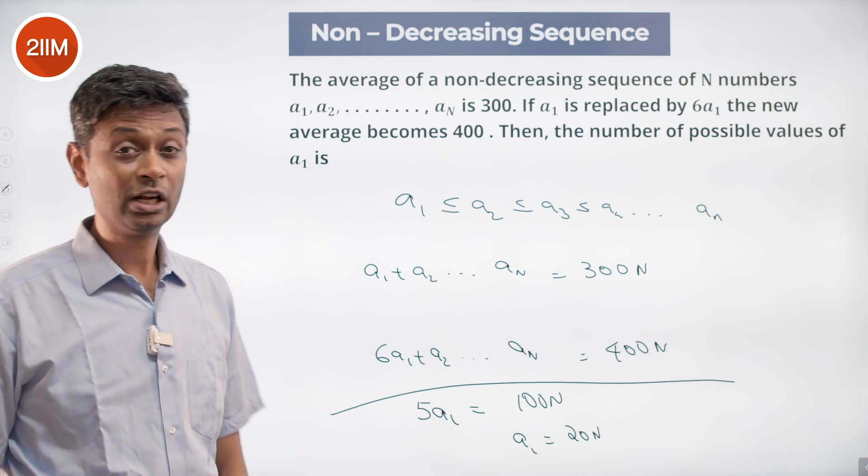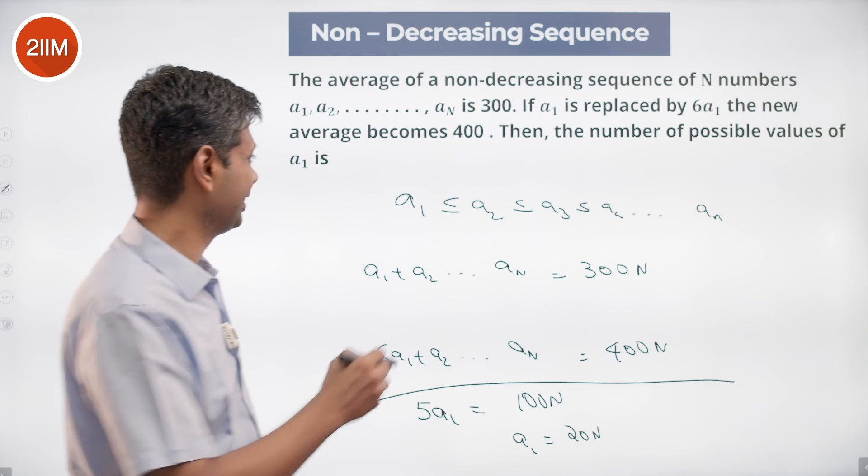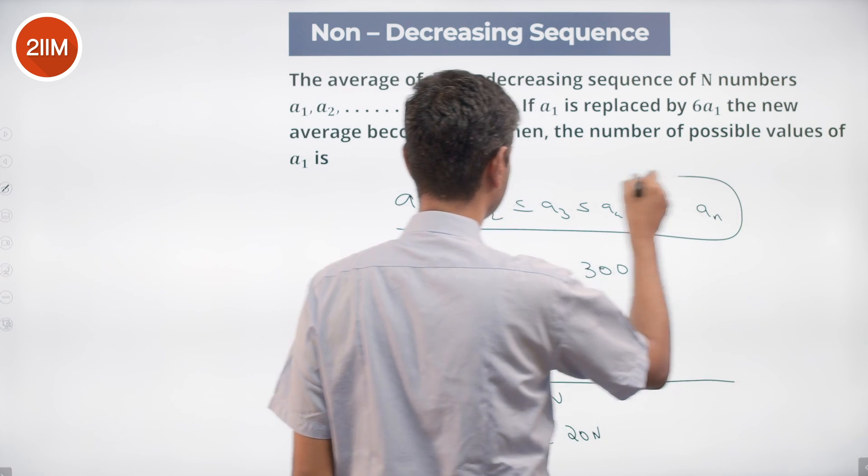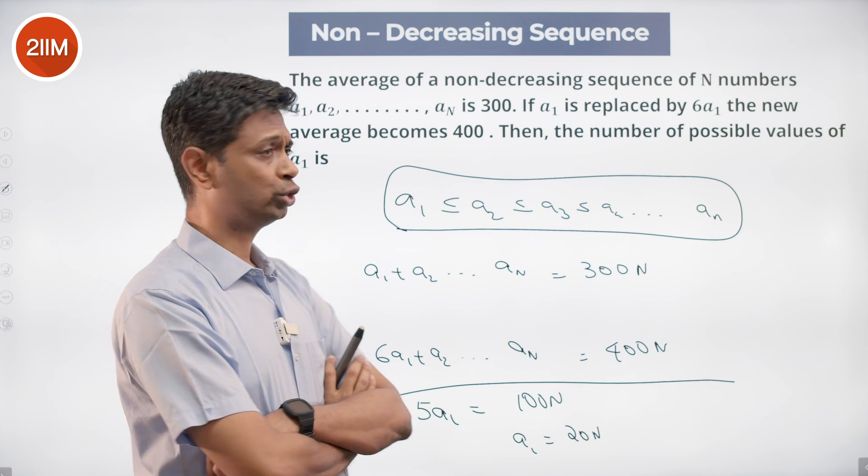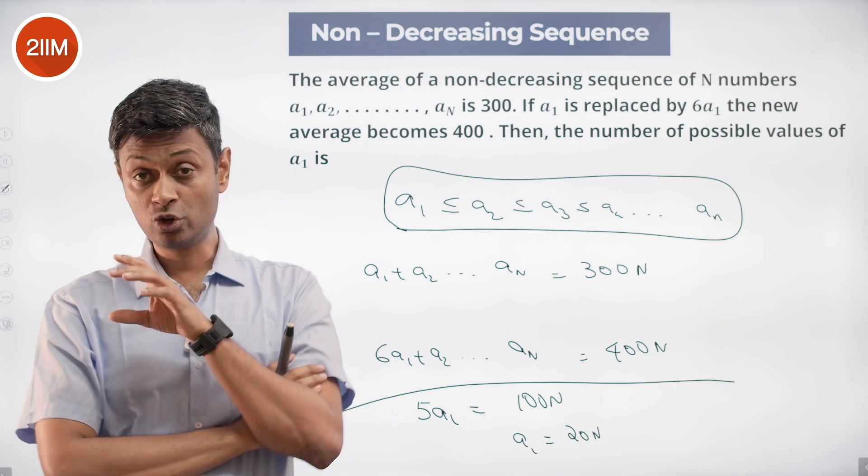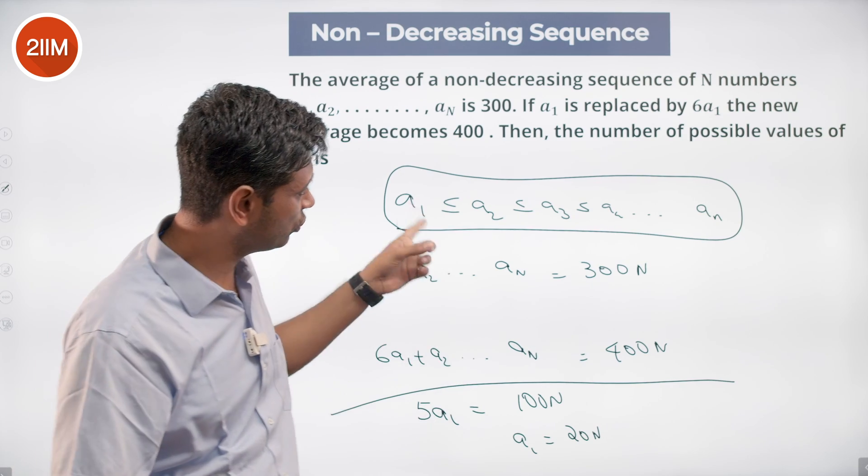Now is where this question gets interesting. This part kicks in: a₁ is 20N, a₂ should be greater than or equal to 20N, a₃ should be greater than or equal to 20N.